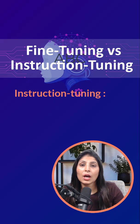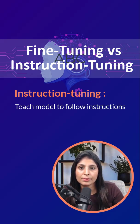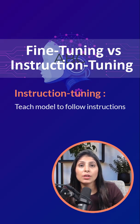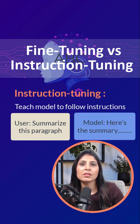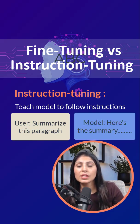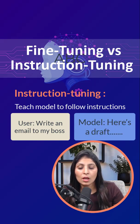Instruction tuning, on the other hand, teaches the model to follow human instructions better. It is trained on examples like: the user says 'summarize this paragraph' and the model says 'here is the summary,' or the user says 'write an email to my boss' and the model says